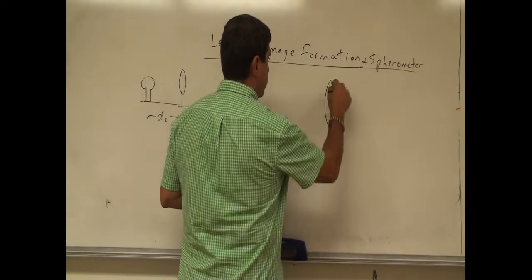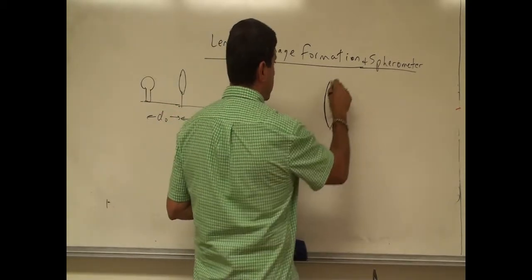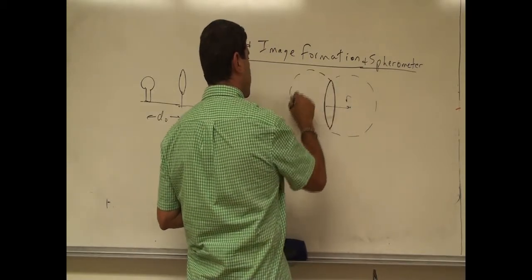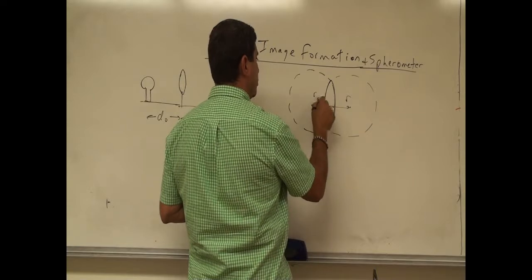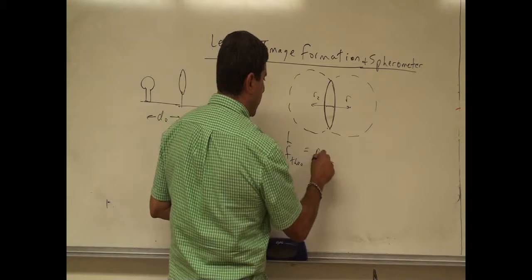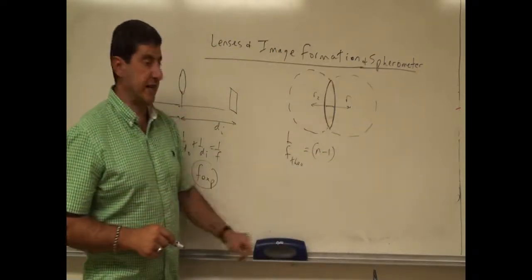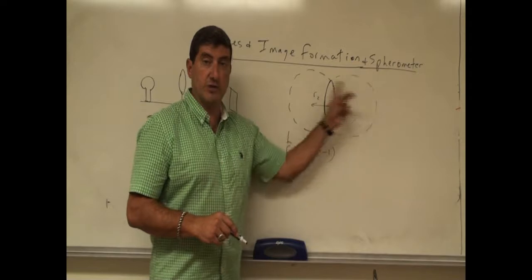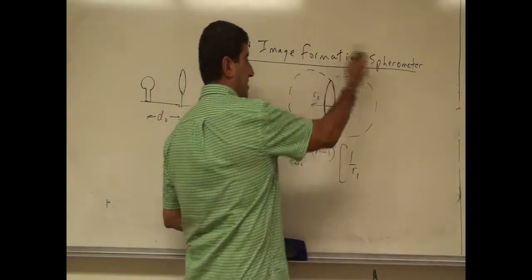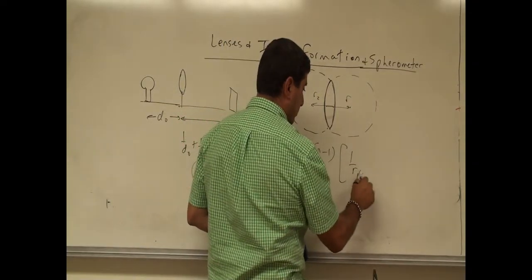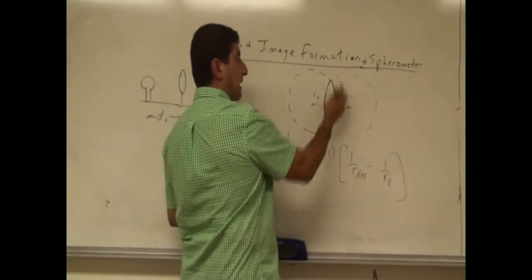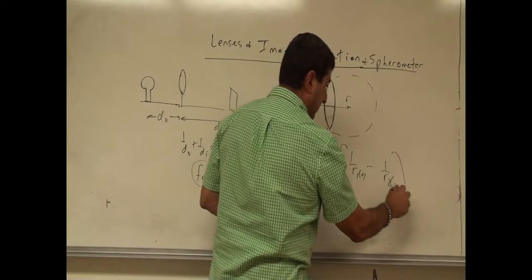If you have a curved lens, this side of the curvature in the real world is called R1. The other side of the lens curved the opposite way is called R2 — that's in the virtual world. So we have 1 over F theoretical equal to N minus 1, the index of refraction of the glass minus 1 because the surrounding medium is air, times 1 over the radius of curvature R1, which is positive, minus 1 over R2, which is negative.